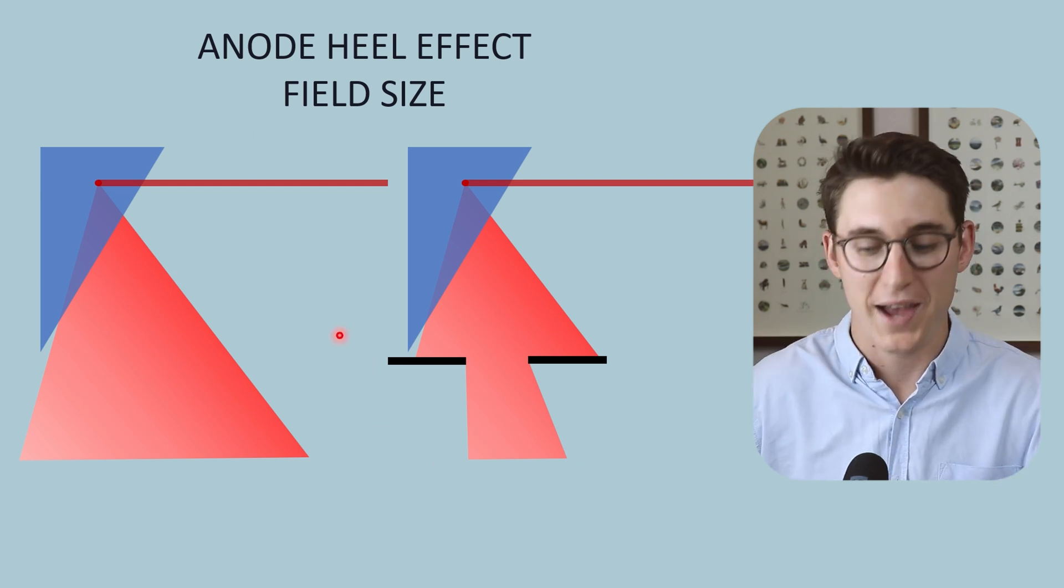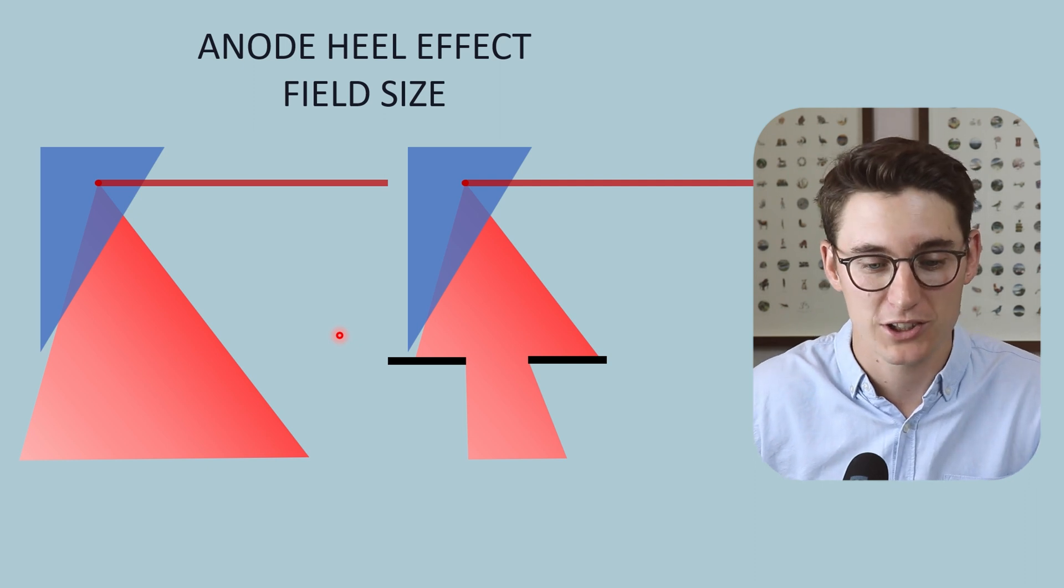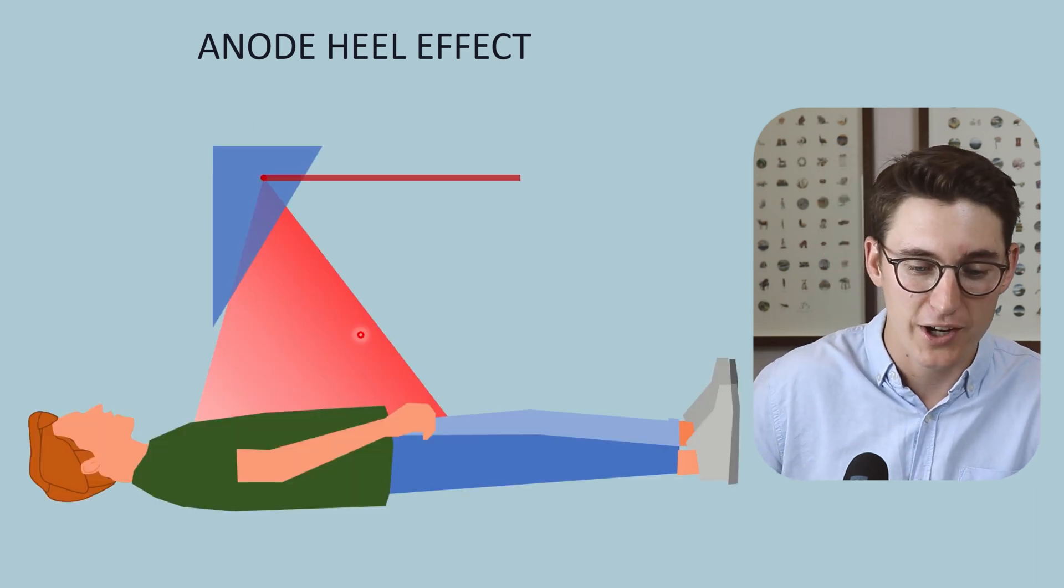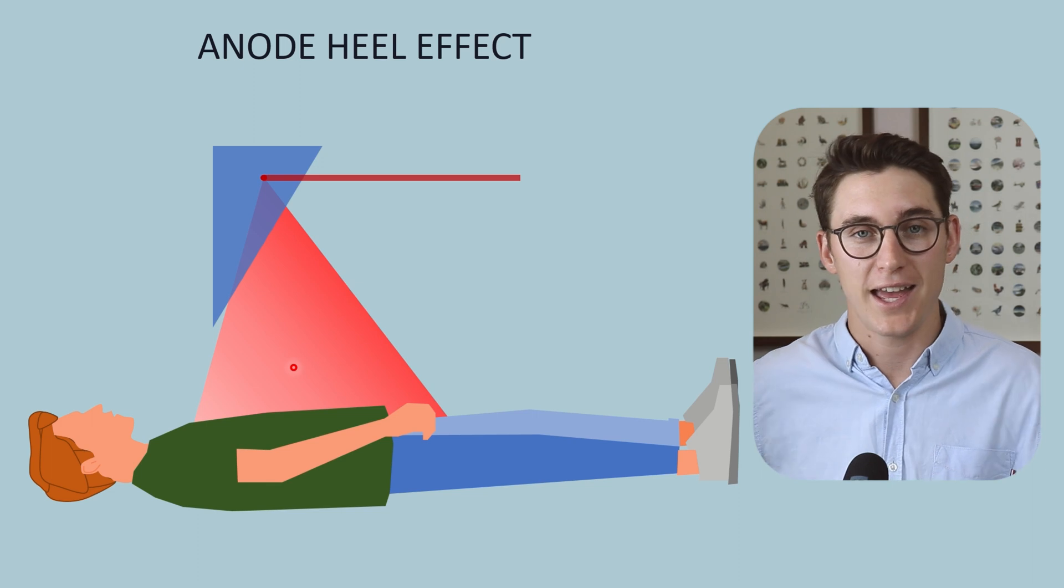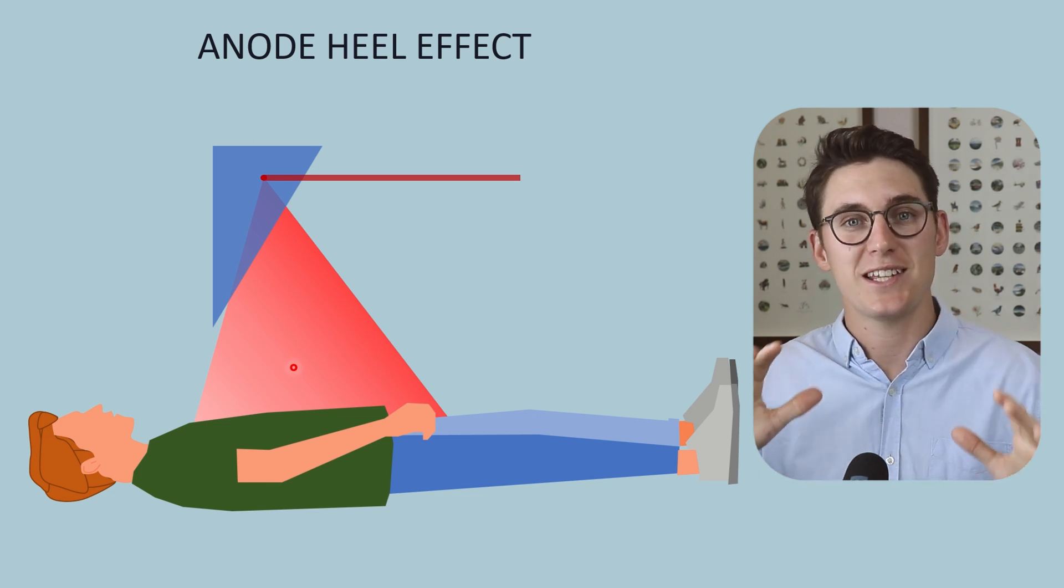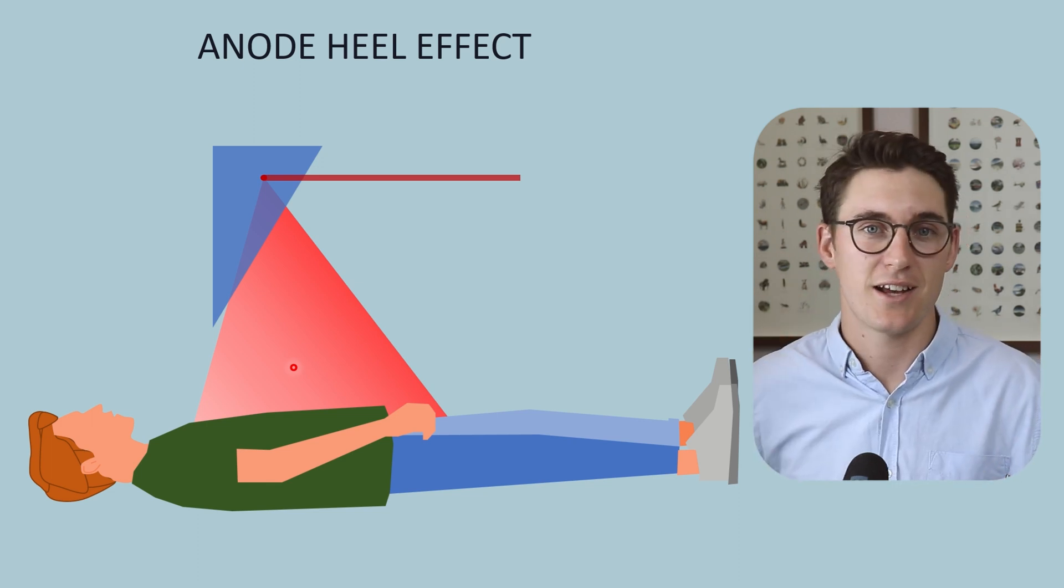Now the anode heel effect is not all bad. We can use it to our advantage. When we are x-raying certain portions of a patient, certain regions in that image will be more dense than other regions.